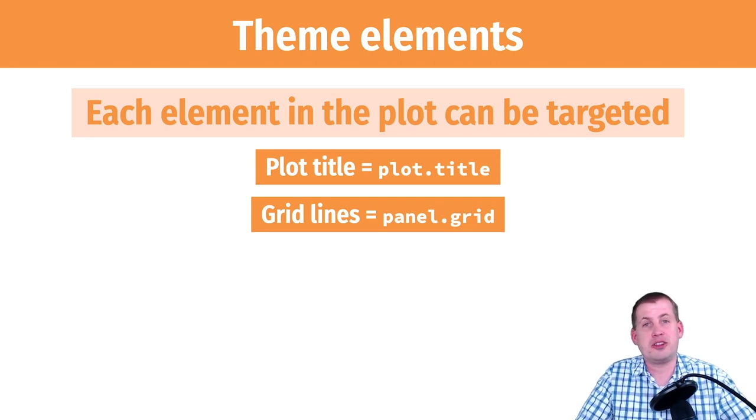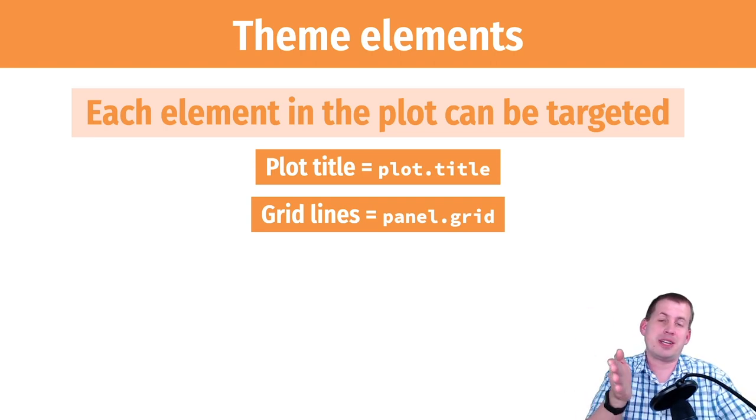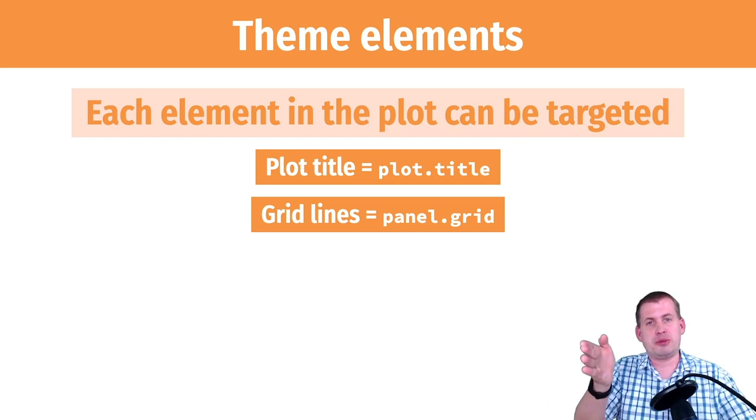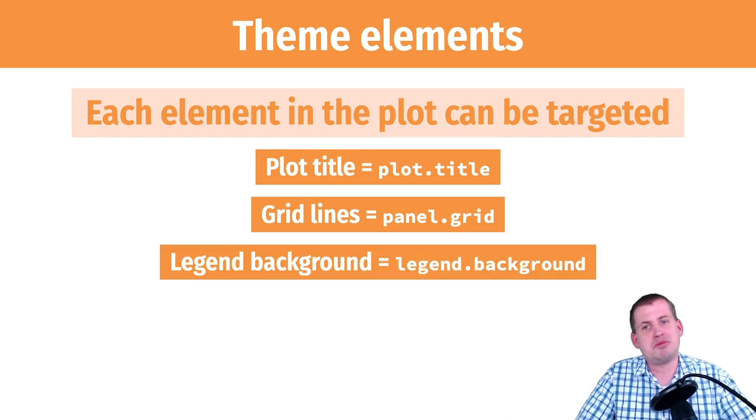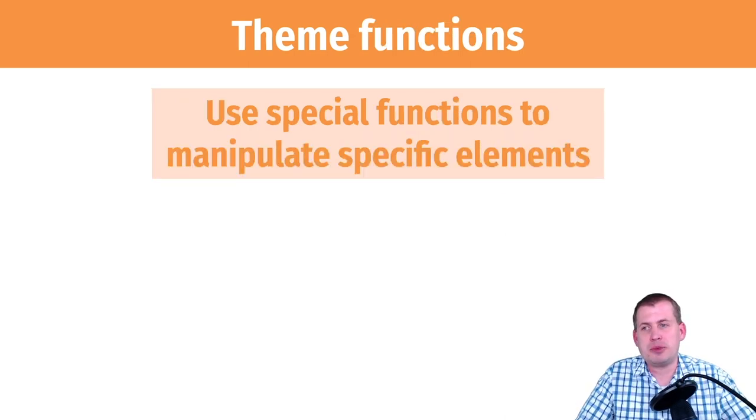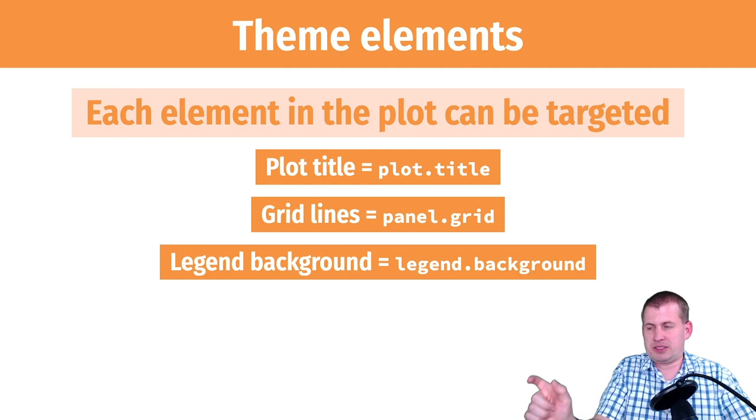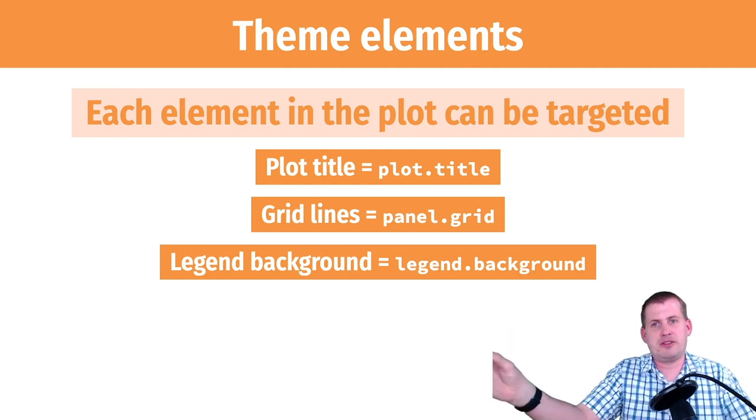If you want to target the grid lines and turn them off, or turn just the minor grid lines off—which are the lines that show up in between the main axis ticks—you target those with panel.grid. You can change the legend background and do a whole bunch of things with these definitions of the ggplot elements.